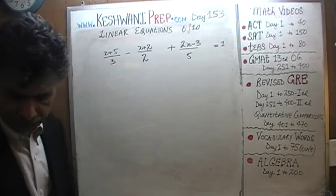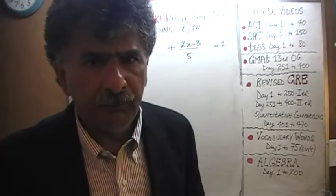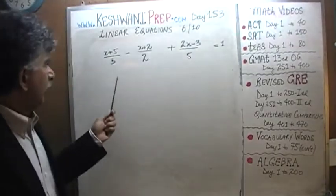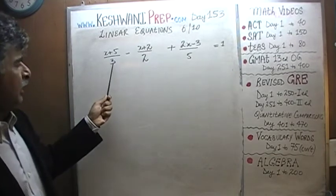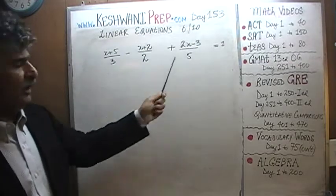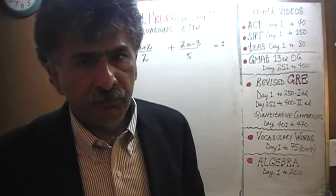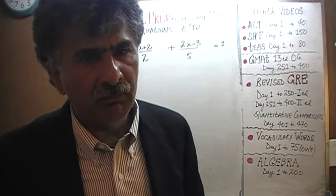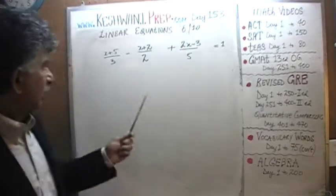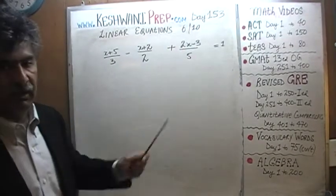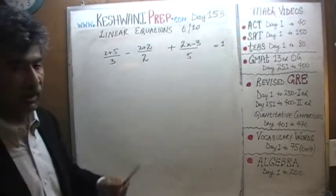Alright, the first thing we need to do here is figure out a way of getting rid of all of these denominators. These denominators are very annoying. How can we get rid of 3, 2, and 5? The least common multiplier is what we are looking for — the smallest number that is a multiple of 3, 2, and 5. The smallest number we can divide evenly by 3, by 2, and by 5 is 30.